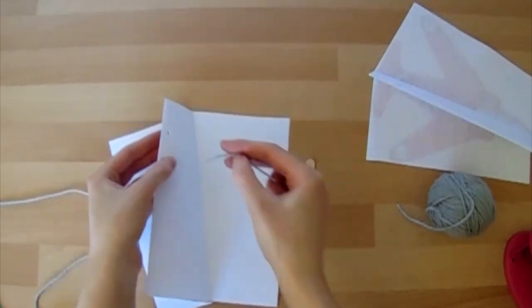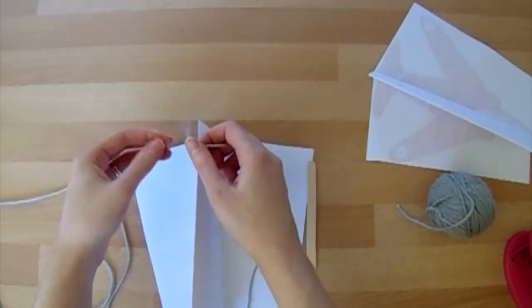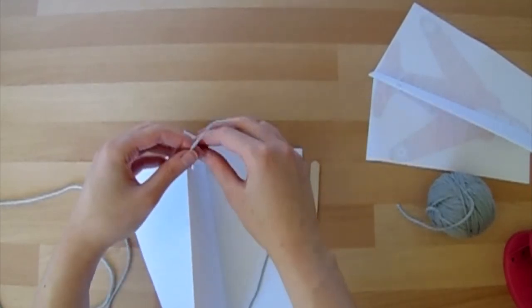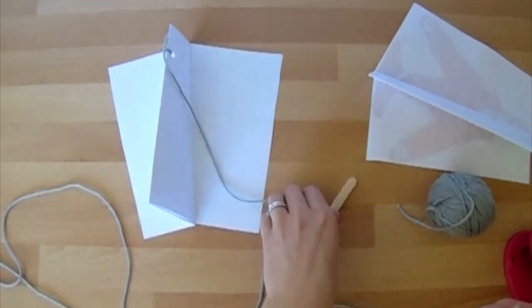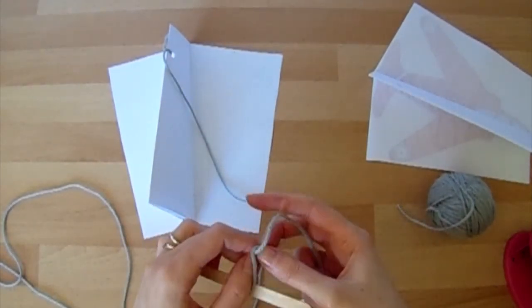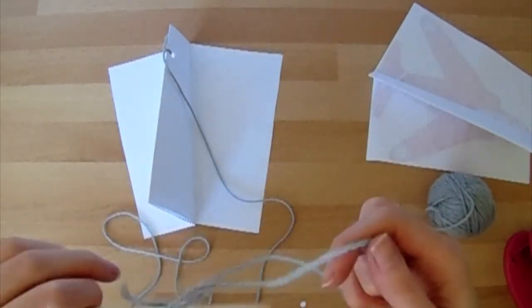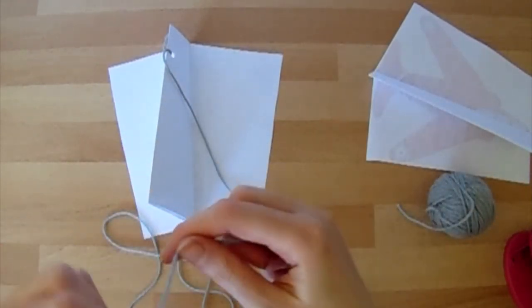I'm going to tie one end to my kite through the little hole. Make sure it's nice and tight. I'm going to put a double knot in to make sure it doesn't come undone. And the other end I'm going to tie onto my wooden lollipop stick. We can then wrap the wool round so that it doesn't get all tangled up.